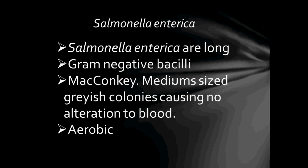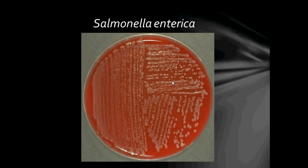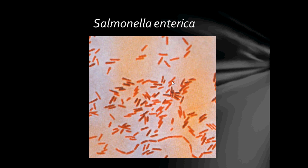Next bacteria is Salmonella enterica. Salmonella enterica are long Gram-negative bacilli. They grow on MacConkey, forming medium-sized grayish colonies and causing no alteration to blood. They are aerobic. This is Salmonella enterica growing on blood agar, and Salmonella enterica in the microscopic view — they are quite long.